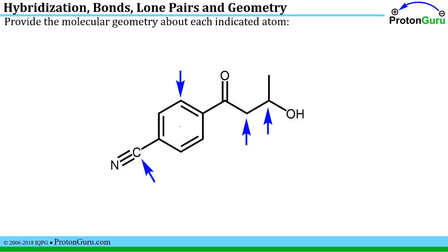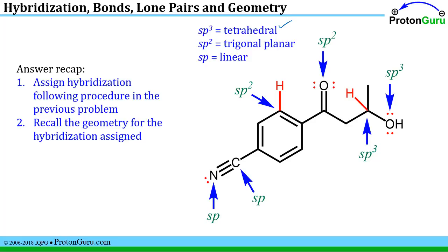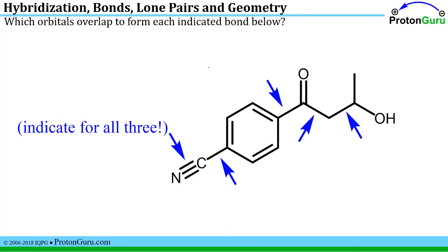Another common application of hybridization is providing molecular geometries about particular atoms. First, we assign the hybridization as in previous problems. Then we remember that each hybridization corresponds to a particular geometry, as learned from VSEPR theory in general chemistry. An SP3 hybridized center has tetrahedral geometry. All SP2 hybridized atoms exhibit trigonal planar geometry. All SP hybridized atoms exhibit linear geometry. We assign hybridization first, then match the geometry to that hybridization state.